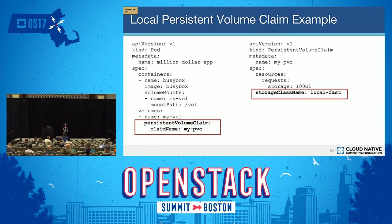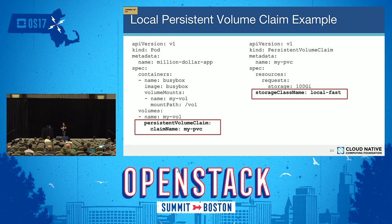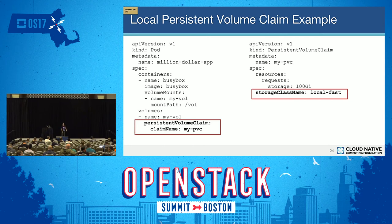I've developed my application on my laptop, deployed the spec, tested it, and it's ready for production. What do I need to change in this spec to deploy it in production? Nothing. This pod spec is completely portable. There are no details about what node to go to or what path the storage is at. I can take this pod spec and deploy it on any cluster. As long as that cluster has storage with the storage class name 'local-fast,' the system will find a relevant volume, bind the two together, and mount that volume into my container.